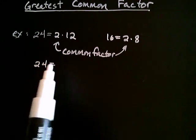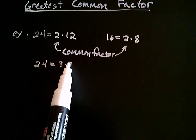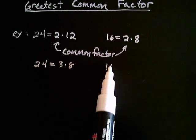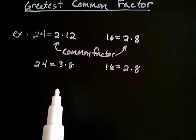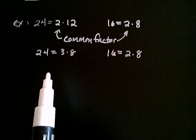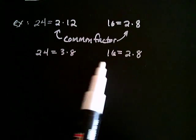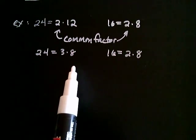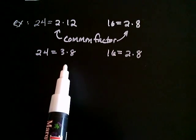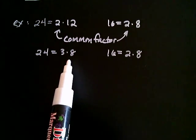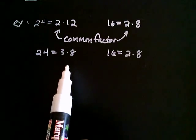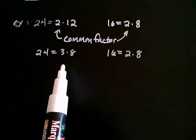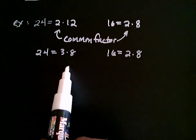On the other hand, 24 can also be written as 3 times 8, and 16 we can still leave as 2 times 8. Once again, if 24 and 16 were talking to each other, they would say, 'Hey, we have an 8 as a common factor.' But notice there's no larger number that they have in common as a factor — 8 is the largest number that goes evenly into both 24 and 16. So 8 is not just any old common factor; 8 is the greatest common factor.